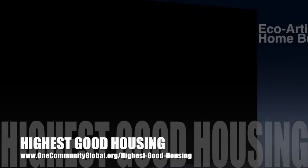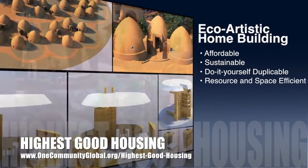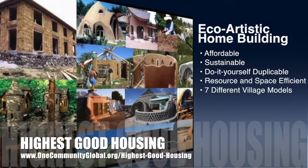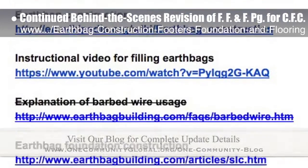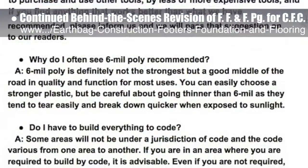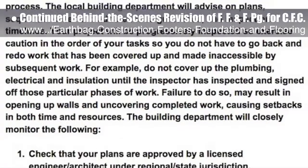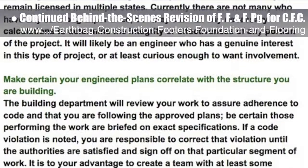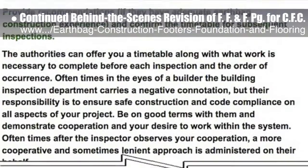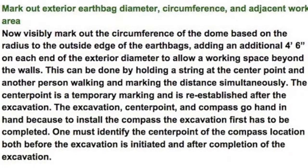One Community's approach to highest good housing is eco-artistic home building that is affordable, sustainable, do-it-yourself duplicable, resource and space efficient, and consists of seven different sustainably constructed village models. This last week, the core team put another 10 hours into behind-the-scenes revision for the footers, foundation, and flooring page for the crowdfunding campaign we are developing. This week's focus was finishing the narrative for gutter construction, exploring the possibility of rice hulls for insulation to meet code requirements, reviewing and updating the resources section, and reorganizing sections covering municipal/county involvement, centerpoint establishment, utilities, stem wall, floor, foundation, and footer excavation. We'd say we're now 68% complete with this total update and rewrite.